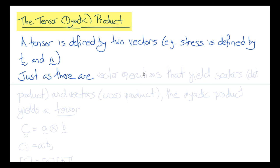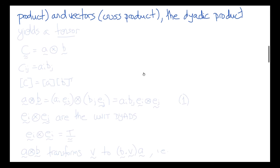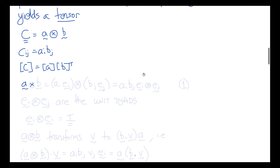Just as there are vector operations between two vectors that yield scalars — in the case of the dot product — or vectors in the case of the cross product, the dyadic product yields a tensor. So the rank-2 tensor C is equal to the dyadic product A dyadic B. In index notation, this is Cij equals Ai Bj. In matrix notation, C equals A times B-transpose — a 3×1 matrix times a 1×3 matrix gives a 3×3 matrix.